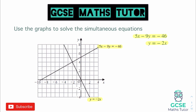When we are solving simultaneous equations graphically, all we're actually looking to do is find the points at which they intersect. If it's two straight lines, they're only going to intersect at one point. But if there is a quadratic, a circle, or a cubic graph involved, they are going to intersect at multiple points. Here we have two straight lines, so they intersect at just the one point. To find the solutions, we write down the x and y coordinate at that point — x equals minus two and y equals four.